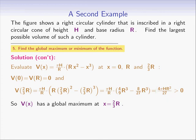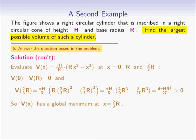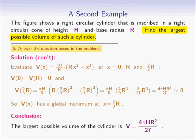We have basically solved the problem. But there is one more step we shouldn't forget: we have to answer the question posed. The question was to find the largest possible volume of such a cylinder. Our answer is that the largest possible volume is v equals 4πhr²/27.